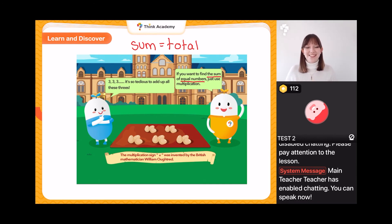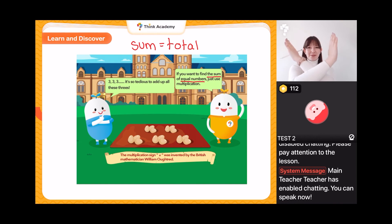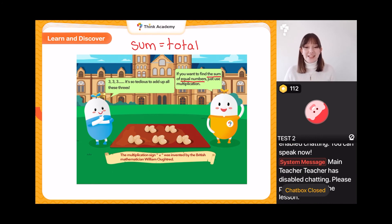We can copy everyone else in the class — we're doing a big X shape like this with our arms. A big X shape — that is what our multiplication sign looks like. We're going to be using this lots and lots in today's class, so keep your eyes peeled for our multiplication sign.